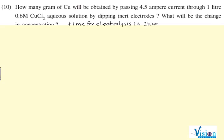The second point is what will be the change in concentration. You have to find that. Now the question asks for 4.5 ampere. One ampere is 96,500.